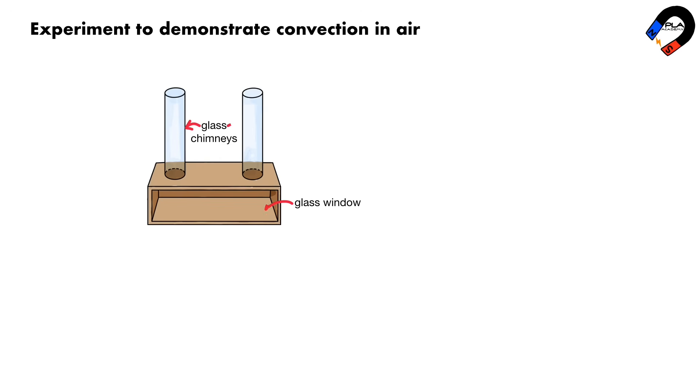An experiment to demonstrate convection in air: Set up the apparatus as shown in the diagram. Place a lighted candle below one of the glass tubes. Hold smoking paper above the other glass tube. The air above the candle flame gets hot and rises. Cooler air is then drawn from the other tube to replace the hot air. Smoke is used so that we can see how the air moves. The movement of hot and cold air sets up convection current.